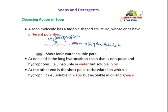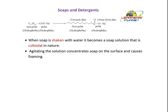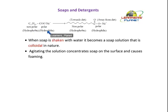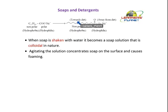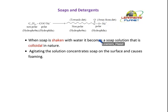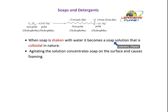Now let's see how soap actually removes dirt. This is the soap — if I write the chemical structure, it is C17H35COONa. The hydrophobic part is the hydrocarbon chain and the hydrophilic part is the ionic end. The non-polar part is oriented towards the dirt, and the polar part is away from the dirt. When soap is shaken with water, it becomes a soap solution that is colloidal in nature.